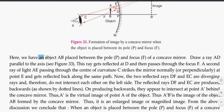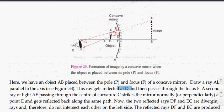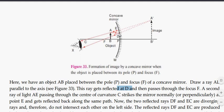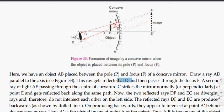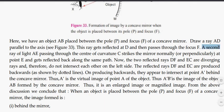Here we have an object AB placed between pole P and focus F. Draw a ray AD parallel to the axis. This ray gets reflected at D and passes through focus F. A second ray of light AE passing through center of curvature strikes the mirror normally.